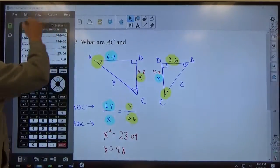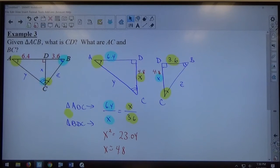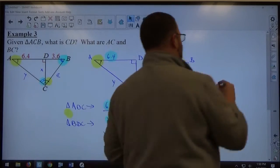So, both the X's are the same. They're both 4.8. So, question A, what is CD? CD equals 4.8.